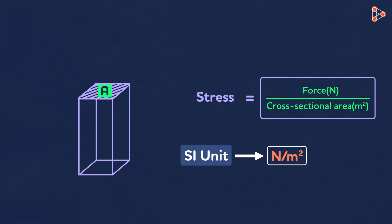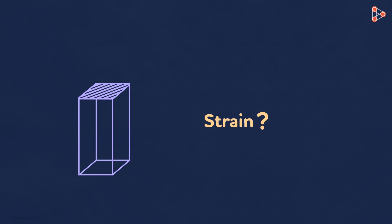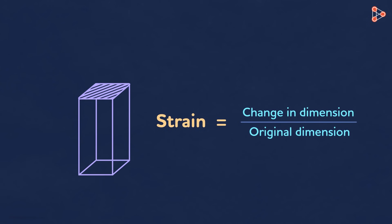However, this unit is given a name, and it is called Pascal denoted by PA. Now we know the basics about stress. What is strain? In very simple language, one can define it as change in dimensions per unit of original dimensions.